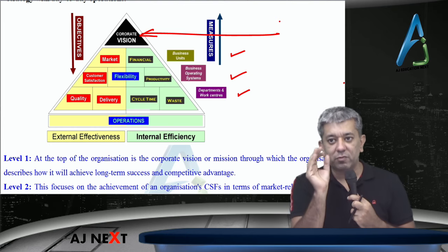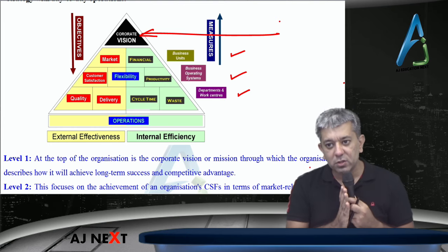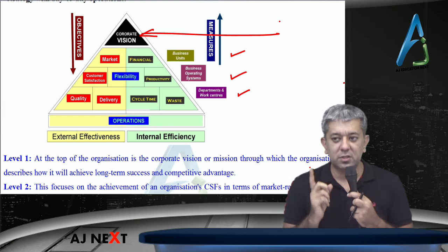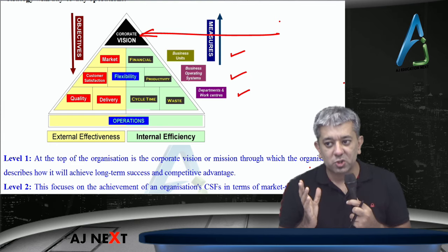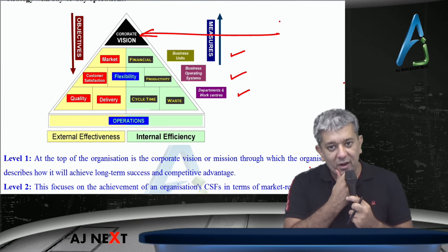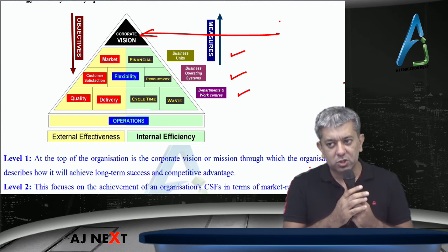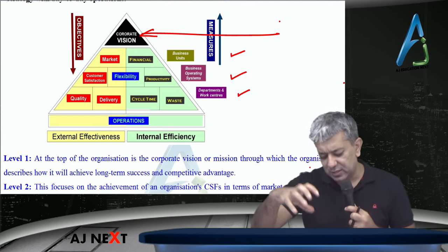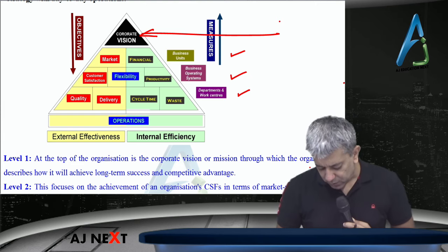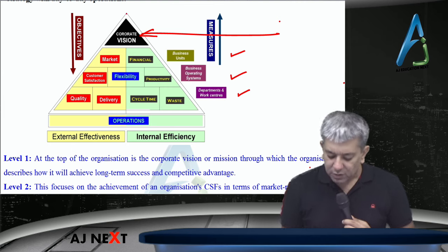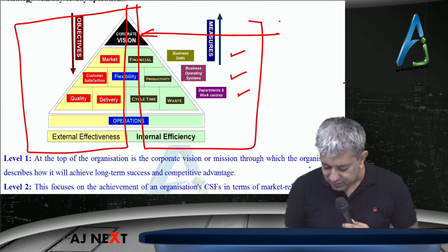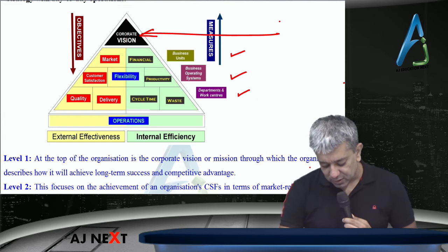The attractiveness of this format is that it links business strategy with day-to-day operations. For example, if my objective is to sell more number of units, I link it to my day-to-day business — what I should do to gain success: treat customers well, have lesser waste. So all these things get concised in the form of a performance pyramid.